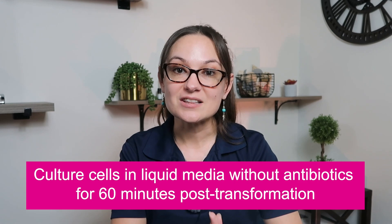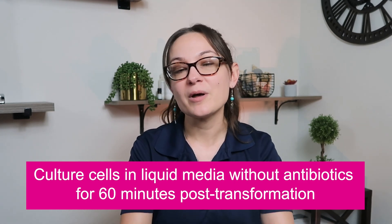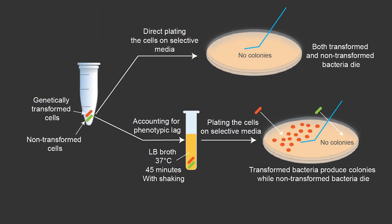After transformation, cells need about an hour before they'll express the antibiotic resistance gene in the vector and start expressing that phenotype. So an important tip when doing antibiotic selection is: after you do your transformation, culture the cells in liquid media without any antibiotic pressure for about 60 minutes. Afterwards you should be good to plate them on antibiotic selective media. If you were to plate them on antibiotic selective media right after transformation, depending on the antibiotic used, there is a chance that even your successfully transformed cells would die because they haven't started expressing the resistance yet.